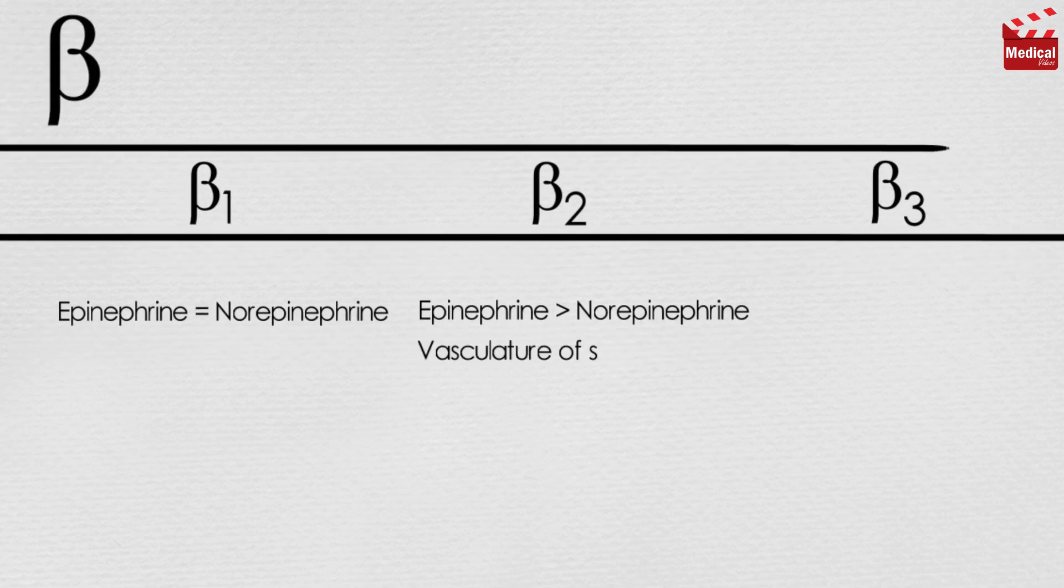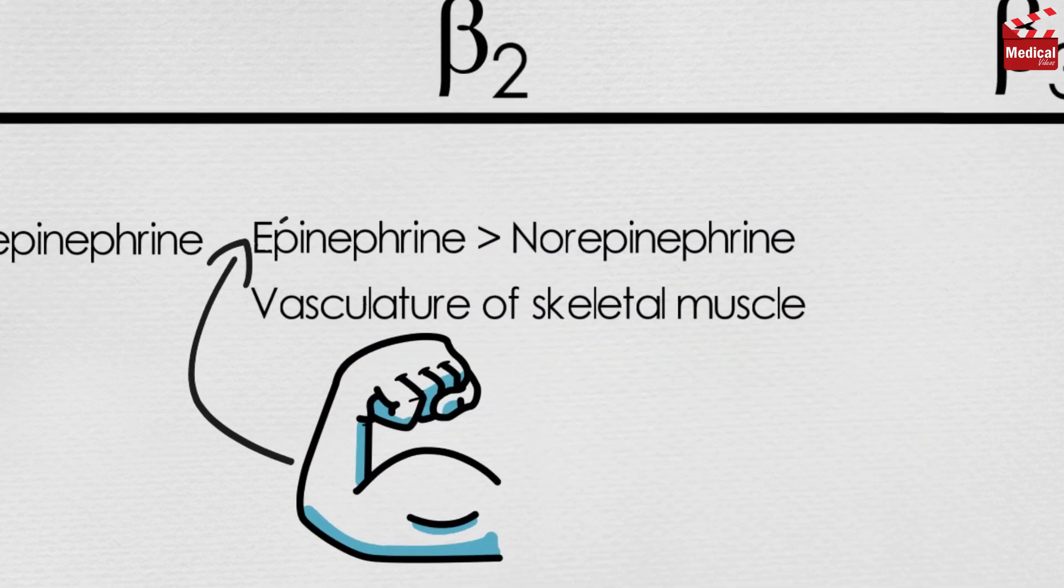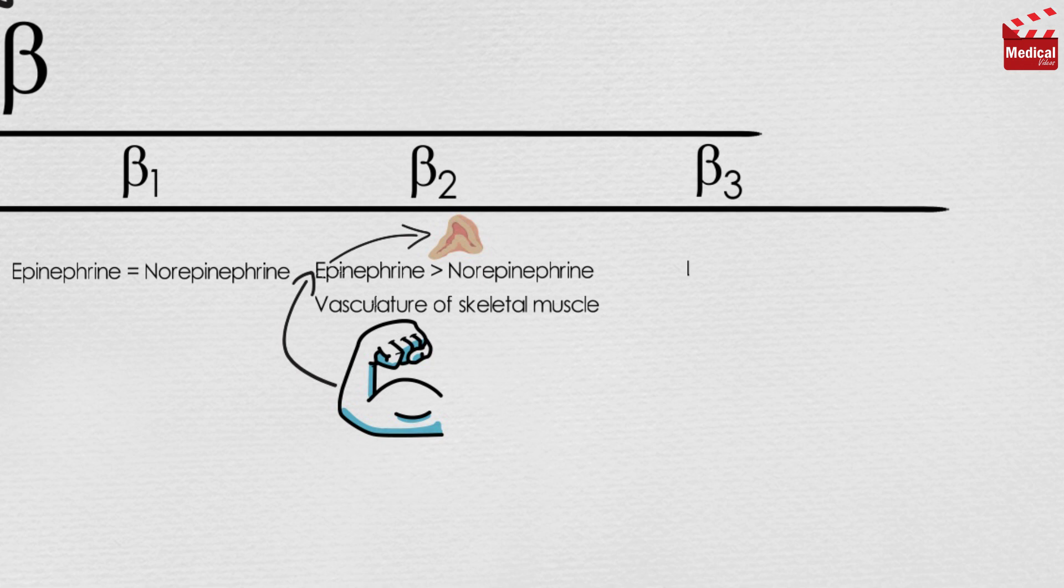So tissues with the predominance of beta 2 receptors, such as the vasculature of skeletal muscle, are more responsive to the effects of circulating epinephrine that, as we discussed in the previous lecture, is released by the adrenal medulla.